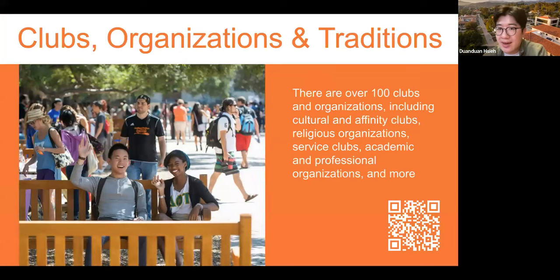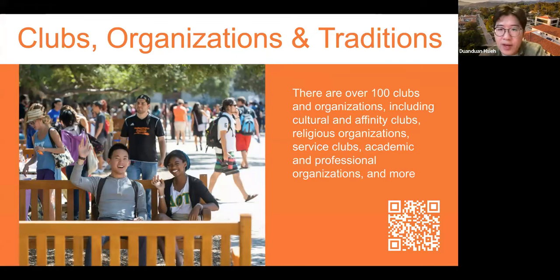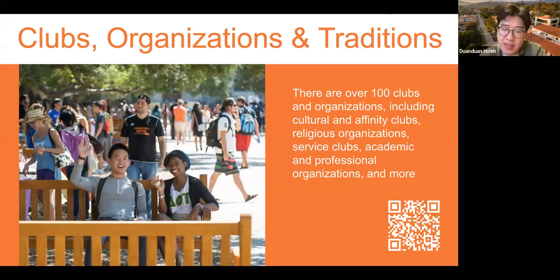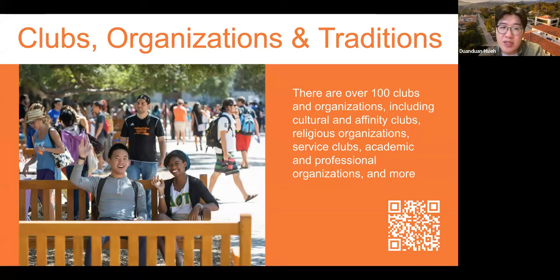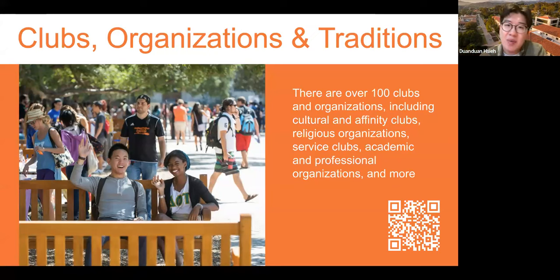We have about 100 clubs and organizations on campus, including cultural and affinity clubs, religious organizations, service clubs, and academic and professional organizations. About a third of clubs are academic-based, a third affinity-based, and a third athletics-based. An additional 25% of students participate in club athletics. Our ultimate frisbee teams recently competed nationally — the men's team ranked 13th and the women's 17th. Our most popular club right now is dance production, with about 10% of the student population participating every year. You don't need any dance background to join. When showcase happens in spring, everyone attends because when 10% of students are in a production, everyone knows someone in it.